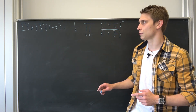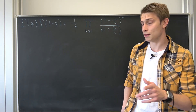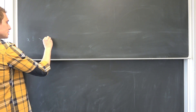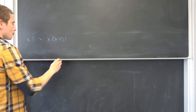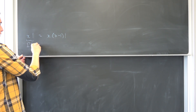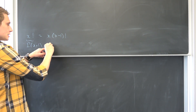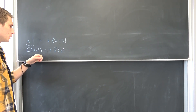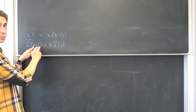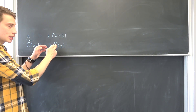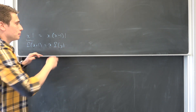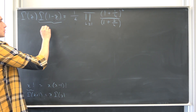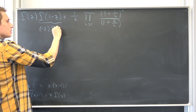Then I got the idea to use the recursive definition of our gamma function. If you have x factorial, that's recursively defined as x times (x-1) factorial. Meaning gamma(x+1) = x times gamma(x). So equivalently, for gamma of 1 minus z, we reduce the argument by 1: it becomes negative z times gamma of negative z.